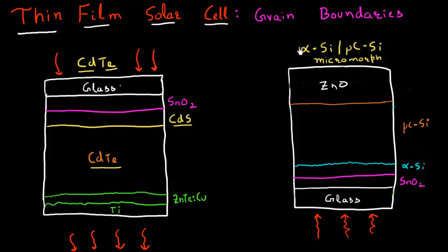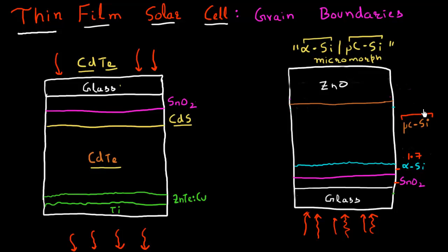Over here is a cadmium telluride based solar cell. In this diagram, I have represented the different layers: glass, then the TCO layer, then the cadmium sulfide n-type contact layer, then the cadmium telluride layer. Similarly, over here on this side, I have a micromorph cell, which is a tandem cell made up of amorphous silicon and microcrystalline silicon. The light is coming from the bottom, with glass, then tin oxide TCO, then amorphous silicon with a higher band gap of approximately 1.7, and then microcrystalline silicon below it. People are very comfortable depicting solar cells this way.